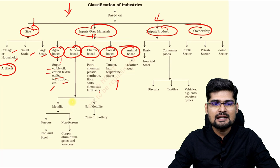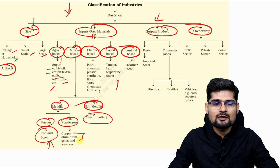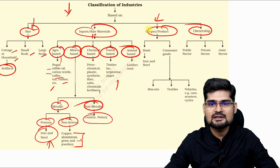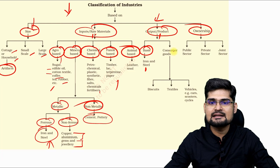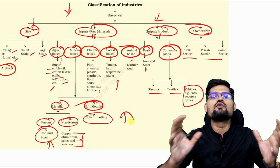In the mineral category you have metallic or non-metallic minerals — for example, non-metallic includes cement and pottery industries, while metallic includes ferrous and non-ferrous. Non-ferrous includes copper, aluminium, gems and other jewellery. On the basis of output, basic industries include iron and steel, and consumer goods industries include biscuits, textiles and vehicles such as cars and bikes. Ownership-based classification is also included. You can pause the video and note it down.